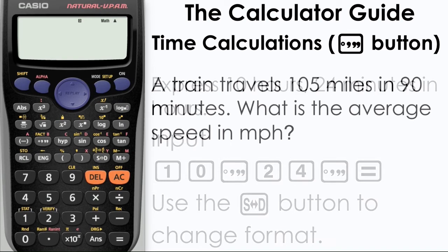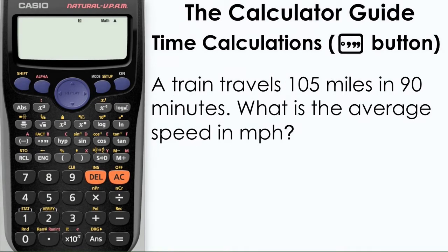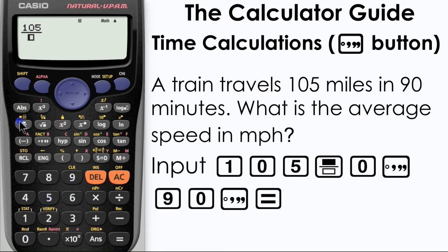More of a practical question now. A train travels 105 miles in 90 minutes. What is the average speed in miles per hour? Speed is distance divided by time.